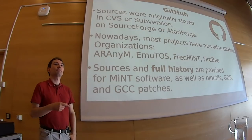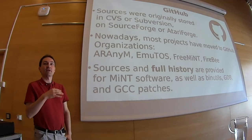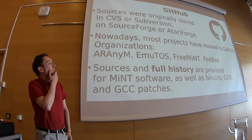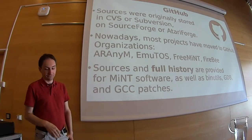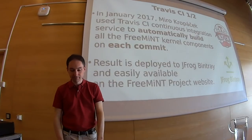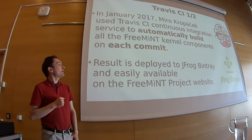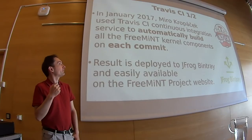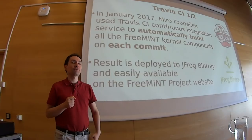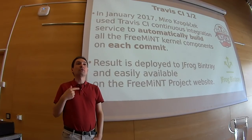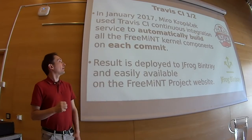GitHub: this is a typical example where new tools can be used for old software. Because some projects were in CVS, some weren't at all, and recently all the projects have moved to GitHub — with all the facilities we know: easy browsing on the web and also full history. Travis CI is really something interesting because it's an automatic building tool on the web. It can be used to rebuild everything — to rebuild the FreeMiNT kernel and all the components on each commit. Everything is deployed to binary snapshots, so now on every commit everyone can get daily snapshots.